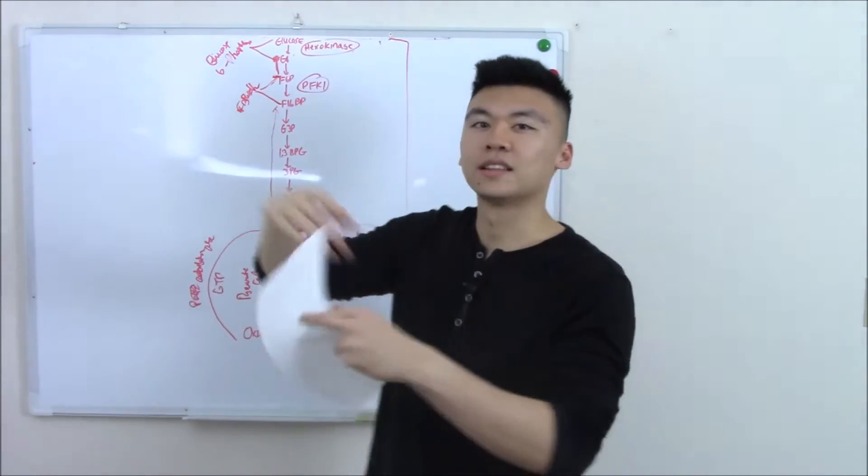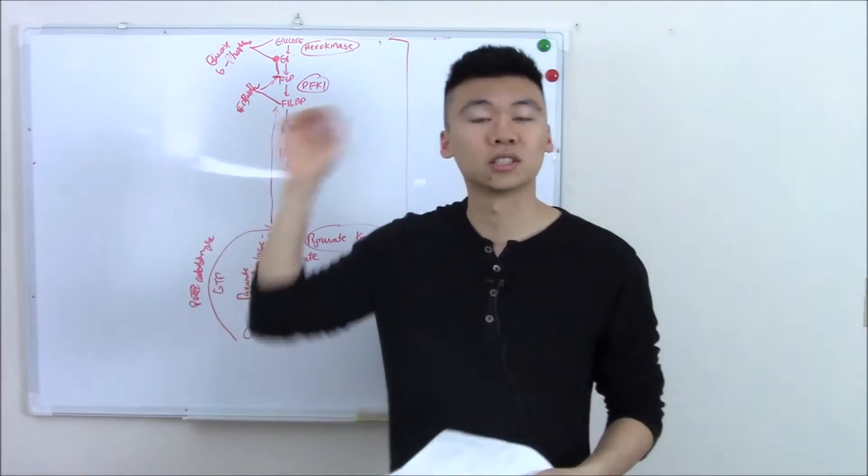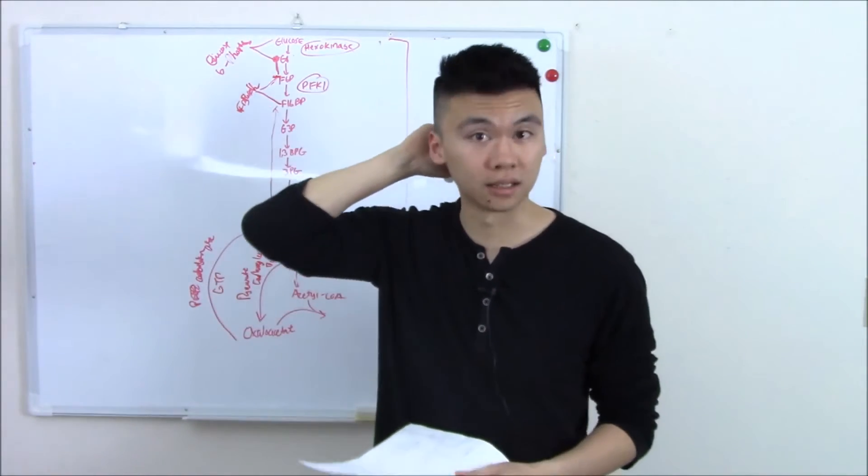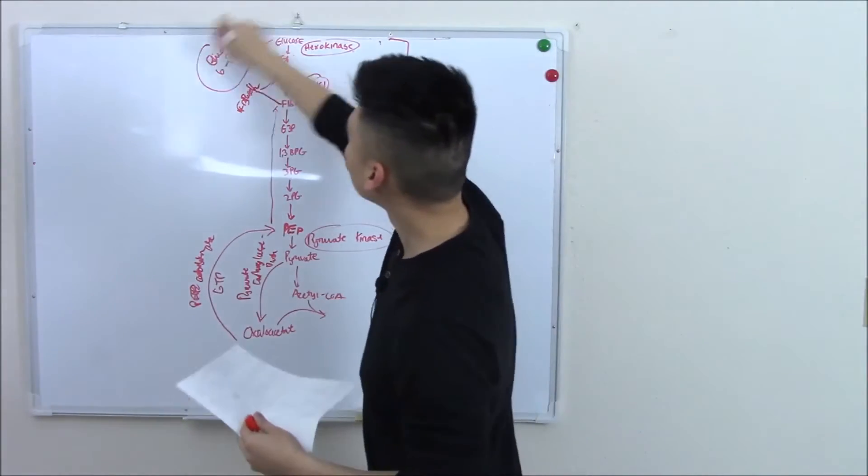Do you remember the enzyme that takes phosphates off? Phosphatase takes that phosphate group off. Now you have free glucose. Glucose goes into the bloodstream and that is gluconeogenesis.